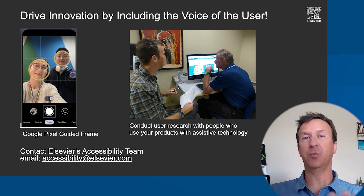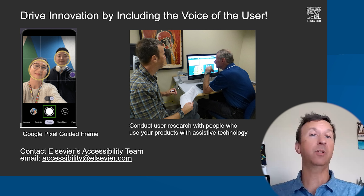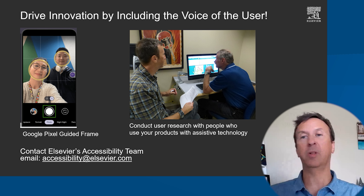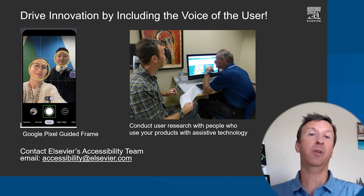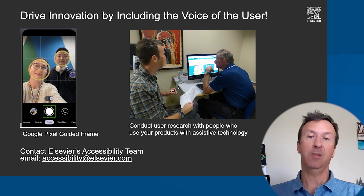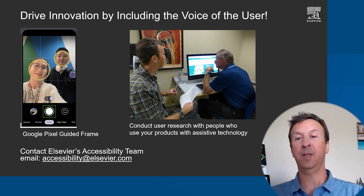All of these tools will help improve the overall usability and accessibility of your websites, including book chapters in HTML. However, it's really including the voice of the user — including people with disabilities in your journey — which will open up paradigm-shifting innovations for your users. As an example, Google Pixel's guided frame feature helps people who are visually impaired take better photos. This was just a whistle-stop overview of web accessibility testing. You can contact Elsevier's accessibility team by emailing accessibility@elsevier.com. Thank you, and have a wonderful day.